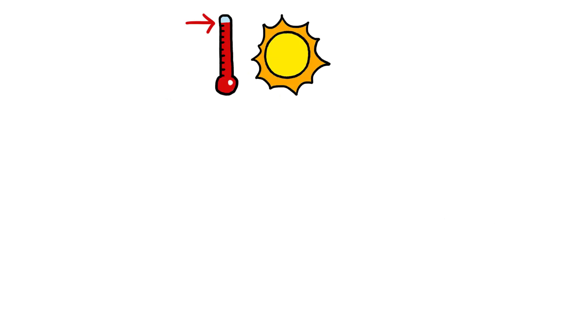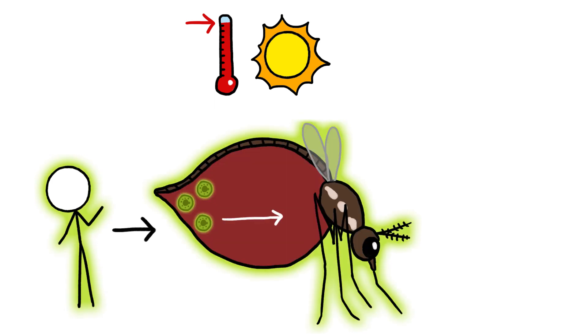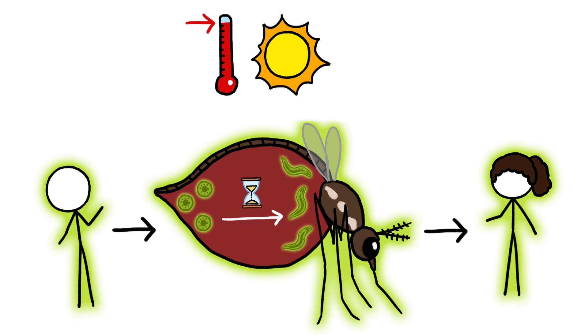But climate also helped, because once the parasite spreads from a person to a mosquito, it needs time to develop into its infectious stage before getting transferred to another human. The cooler the weather, the more slowly it develops.